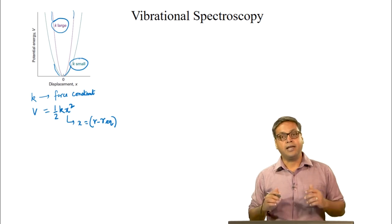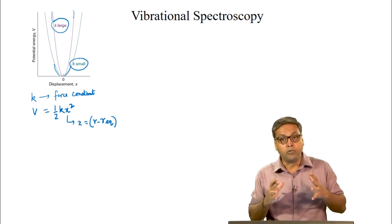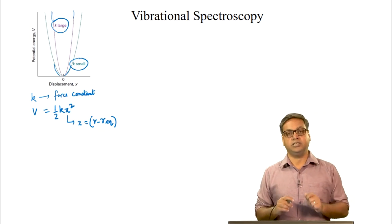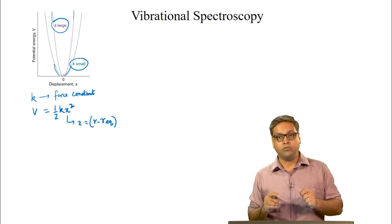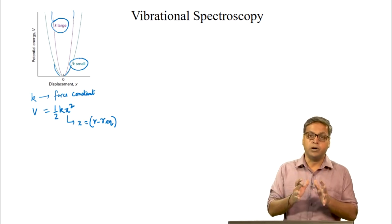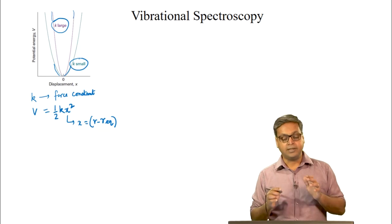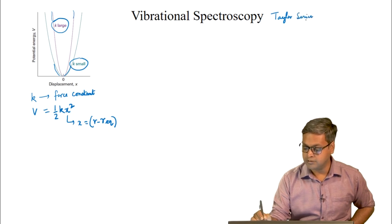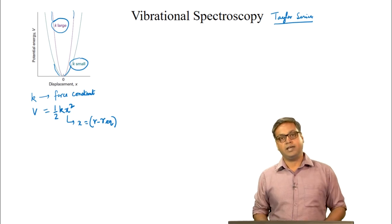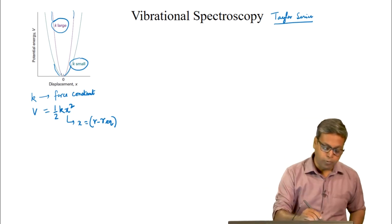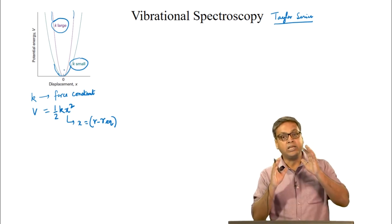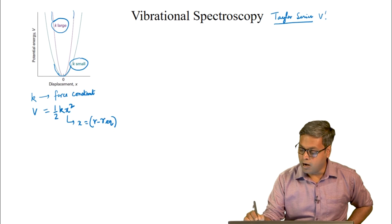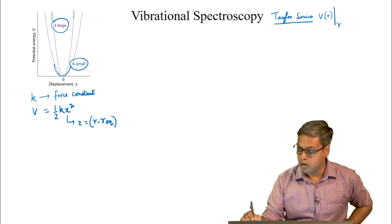In order to understand the connection between the shape of the molecular potential and the value of k, we can expand the potential energy V(r) around the minimum by using a Taylor series. We will be expanding V(r) around r-equilibrium, as the minimum of the potential energy is found at the equilibrium bond length.